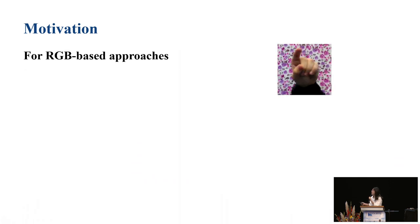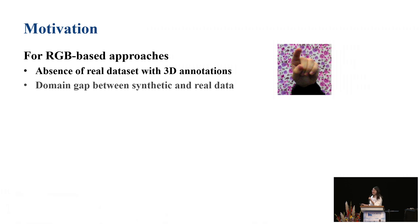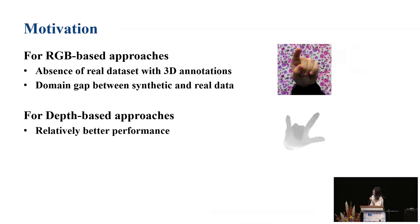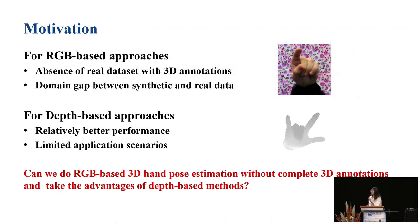Based on our observations, RGB-based approaches lack real datasets with accurate 3D annotations and there exists a domain gap between synthetic and real data. Depth-based approaches can get relatively better performance because they get more information in the depth dimension. However, they are limited in application scenarios. Can we do RGB-based 3D hand pose estimation without complete 3D annotations and take advantage of depth-based methods?